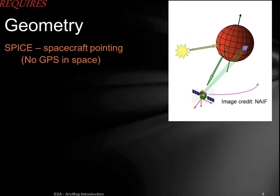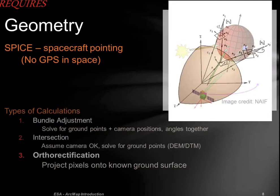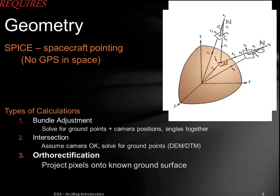GIS requires the geometry — the SPICE, the spacecraft location — and then types of calculations. Not only do you have to position the data on the globe, you should also bundle-adjust the data together, which helps beat down the errors. That's something we stress at USGS as very important: not just one image at a time, but bundle-adjusting a whole set of data.